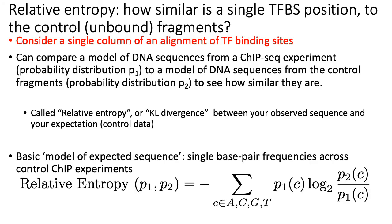Let's move on now to discuss relative entropy, a close cousin of the absolute entropy. Now that you have a sense of what entropy is and how to calculate it, we'll jump to the topic of relative entropy, which is a way of calculating, for a given position in a transcription factor binding site, how similar the distribution of bases at that single position is to the control unbound fragments.